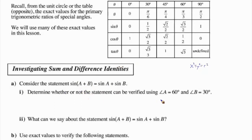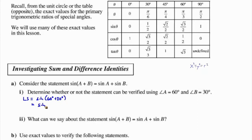Let's explore this by determining whether or not this is true for the first angle being 60 degrees and the second angle B being 30 degrees. The left side is going to be equal to sine of 60 degrees plus 30 degrees, and that's going to be equal to sine of 90 degrees. The sine of 90 degrees is equal to 1.